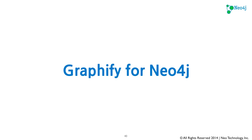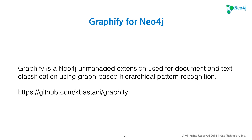Now I'll introduce you to Graphify for Neo4j, an unmanaged extension that runs within Neo4j and does plug-and-play document classification. Graphify is a Neo4j unmanaged extension used for document and text classification using a graph-based hierarchical pattern recognition algorithm. The link to the project repository is github.com forward slash kbistani — you can find Graphify there. I'm really looking for contributors and guinea pigs to test this out by building the extension using the readme file in the project, then placing it into the Neo4j plug-ins directory and starting up the database.